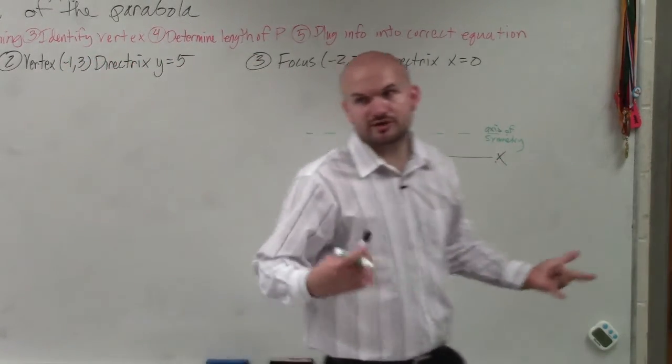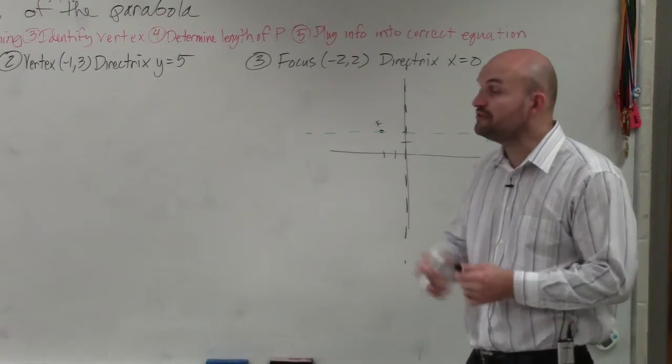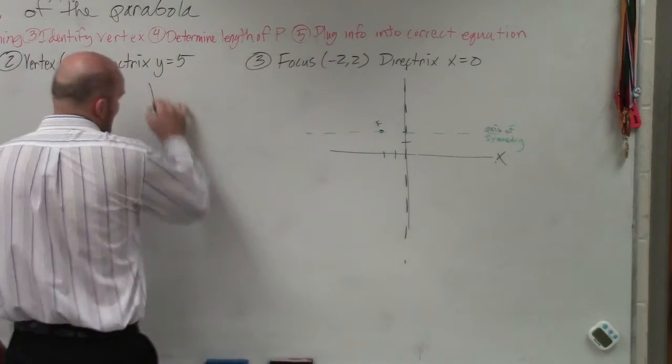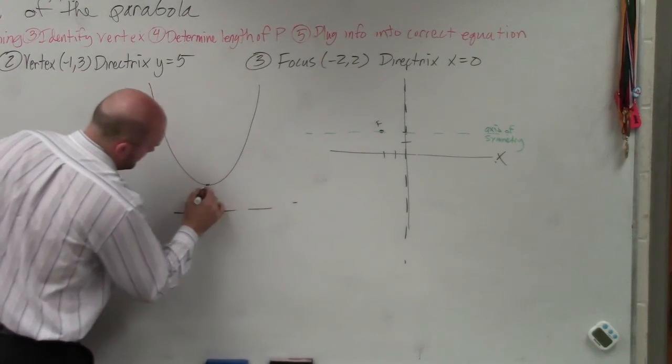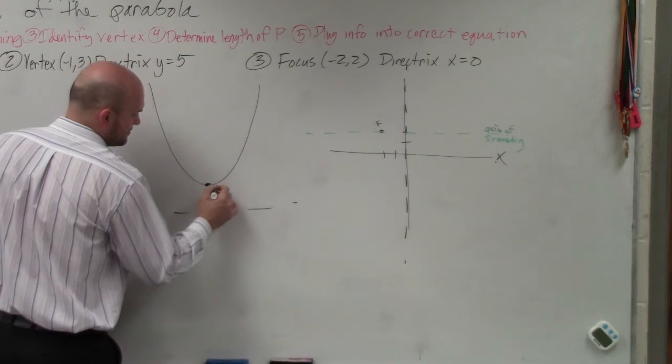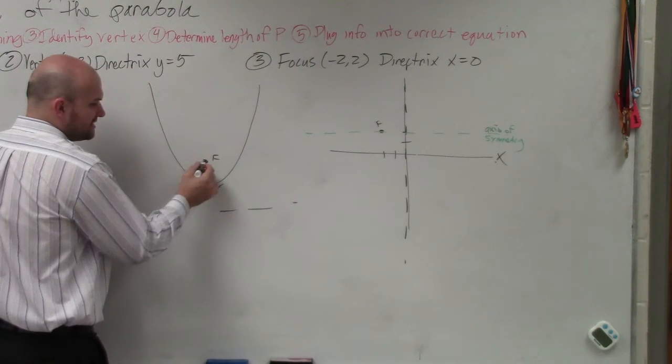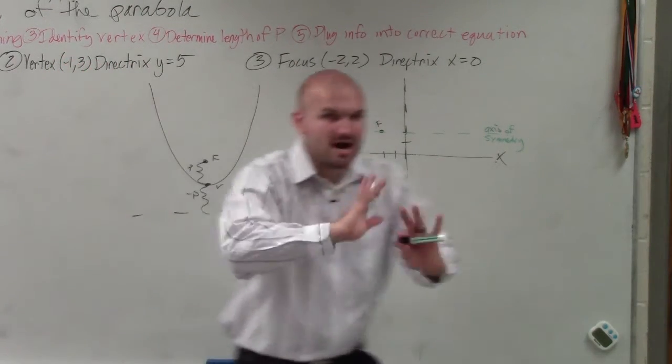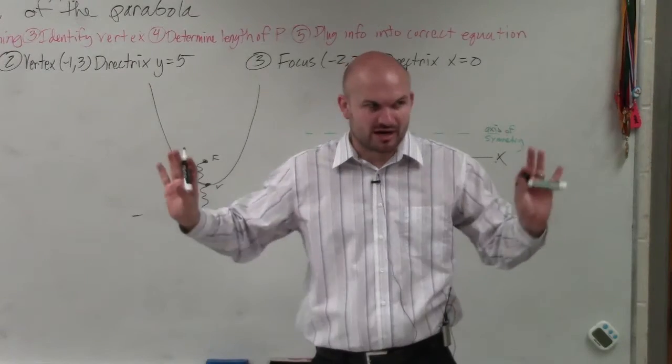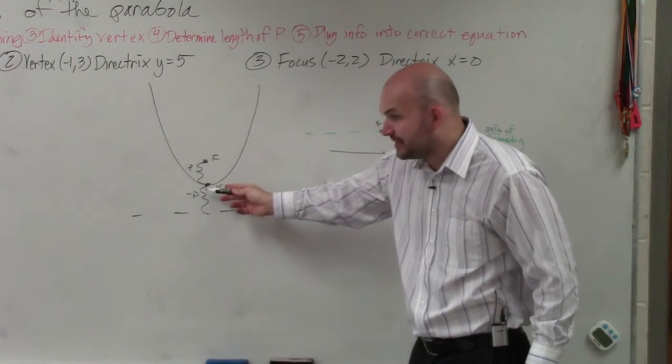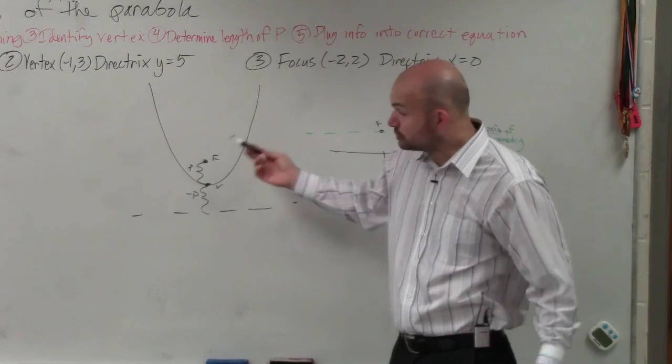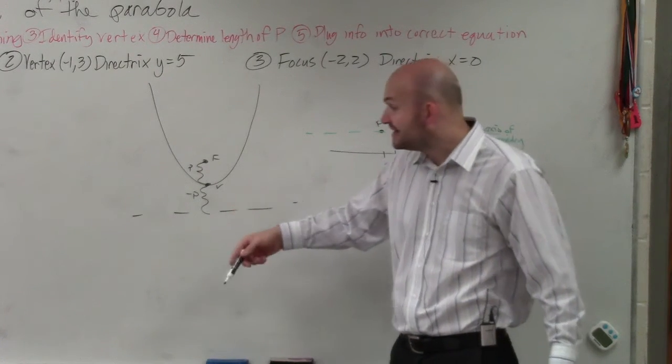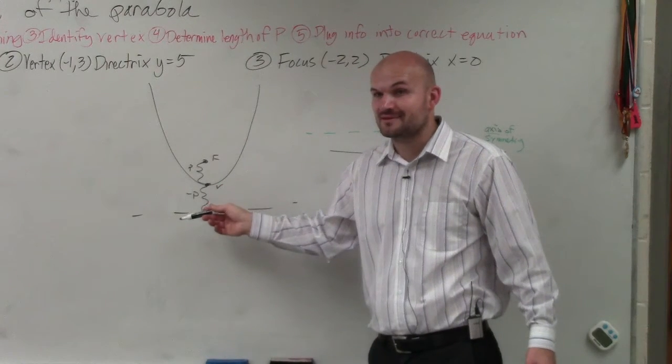Now, the problem is we don't know where the vertex is. But if you guys remember my diagrams, we looked at something like this. Here's the vertex. Here's the focus. Remember, the distance from here to here is p. The distance from here to here is negative p. But forget about direction. Just think of pure length. From here to here is p. From here to here is p. So the total length from focus to the directrix is 2p.